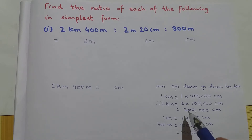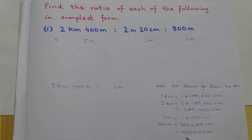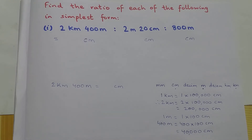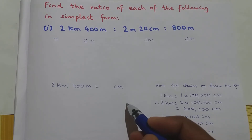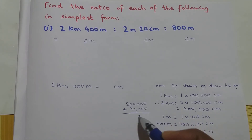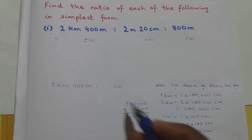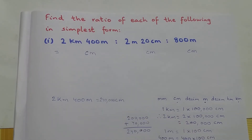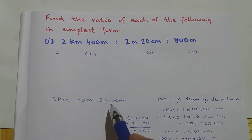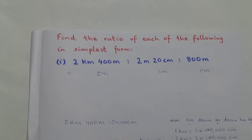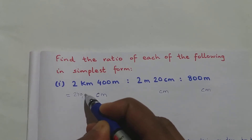So 2 kilometers is 200,000 centimeters and 400 meters is 40,000 centimeters. Adding these two: 200,000 plus 40,000 equals 240,000 centimeters. So 2 kilometers 400 meters is equal to 240,000 centimeters.